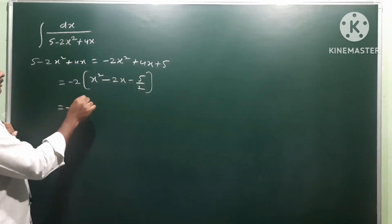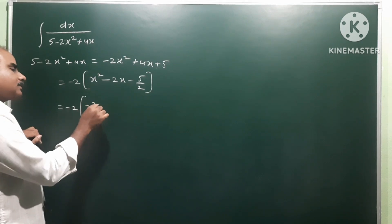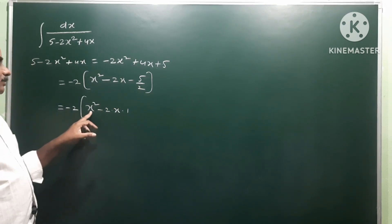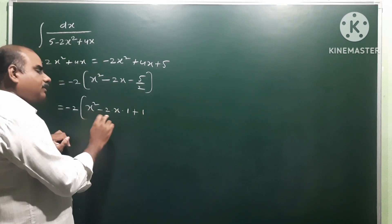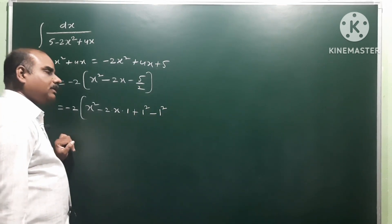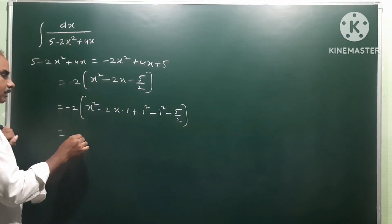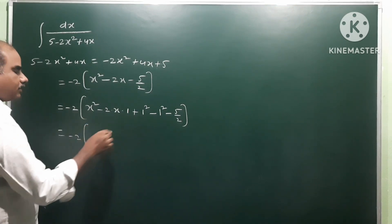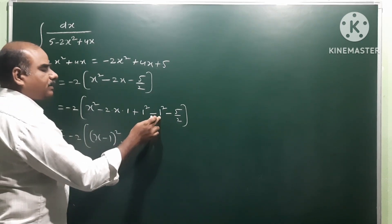Now complete the square on x² - 2x. Using the identity a² - 2ab + b² = (a - b)², we have a = x and b = 1. So x² - 2x + 1² = (x - 1)². Write x² - 2x as (x - 1)² - 1², then include the constant -5/2 inside.